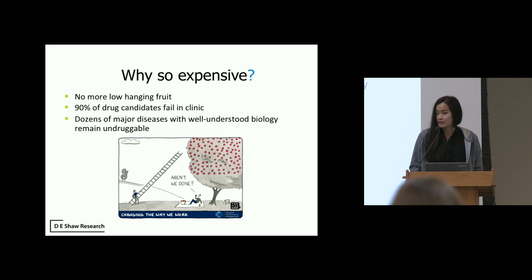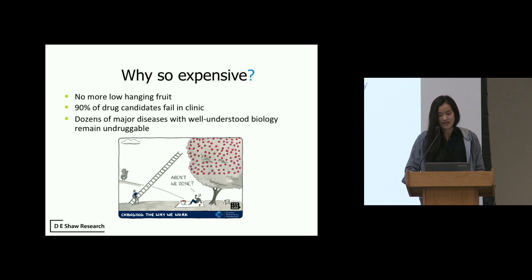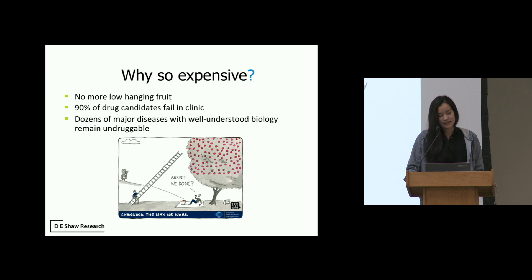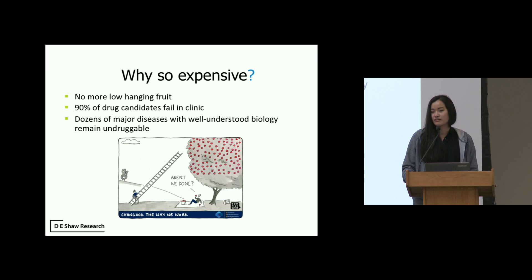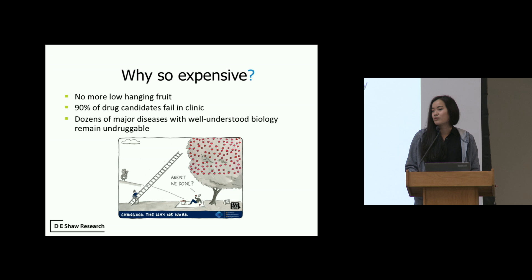There are a couple of hypotheses for why this is such an expensive process. One is that there's no more low-hanging fruit — a lot of traditional drug discovery uses high-throughput screening methods, which is essentially like guessing and checking, so it becomes less and less effective over time. A second reason is that 90% of drug candidates fail in clinical trials. And finally, dozens of major diseases with well-understood biology still remain undruggable today — we know what systems to target at the molecular level, yet we still haven't been able to find a compound to target these diseases. All of this suggests we might want to approach drug discovery from a new angle: computation.